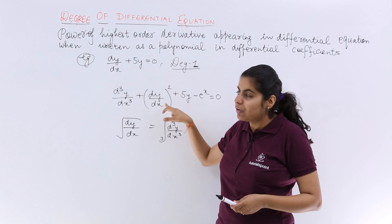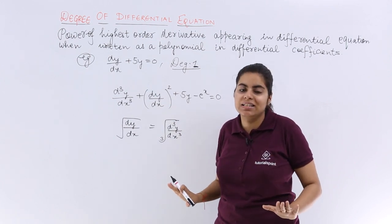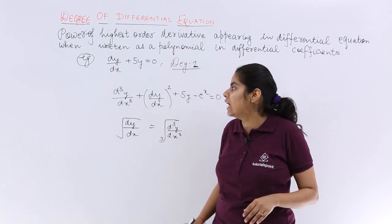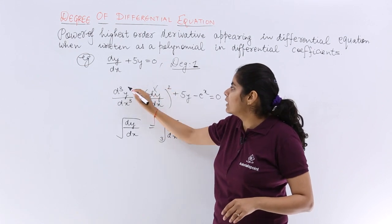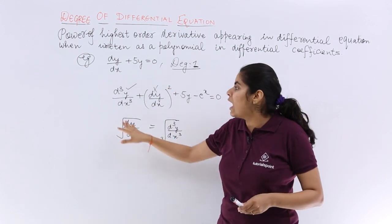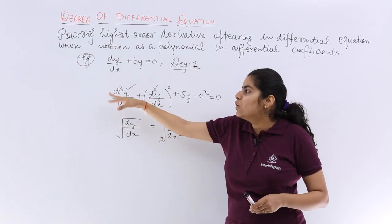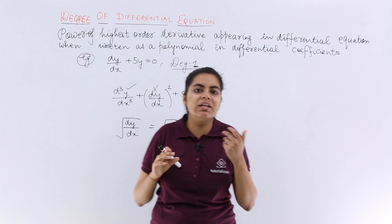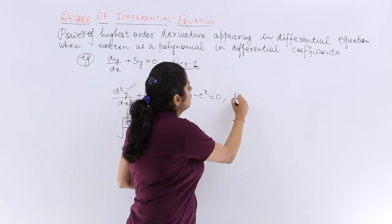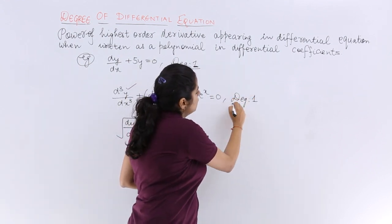Which is highest, 3 or 1? 3 is highest. So don't consider this but consider this. So highest order derivative found out. What is its power? No whole square, no whole cube, power is only 1, so the degree is 1. So here also degree is 1.